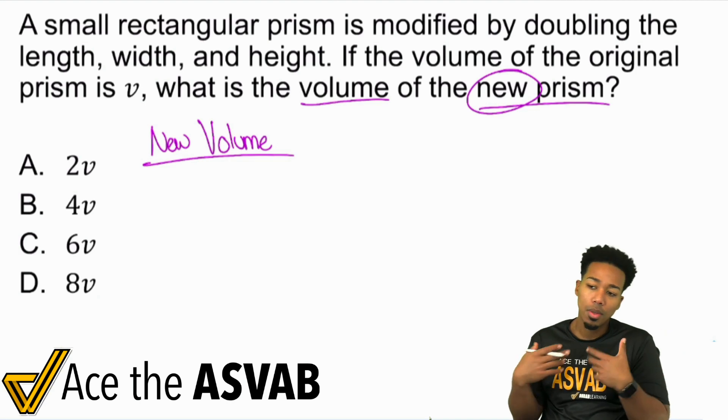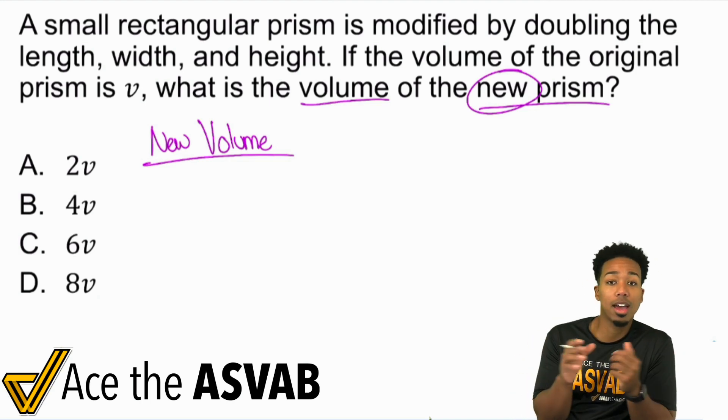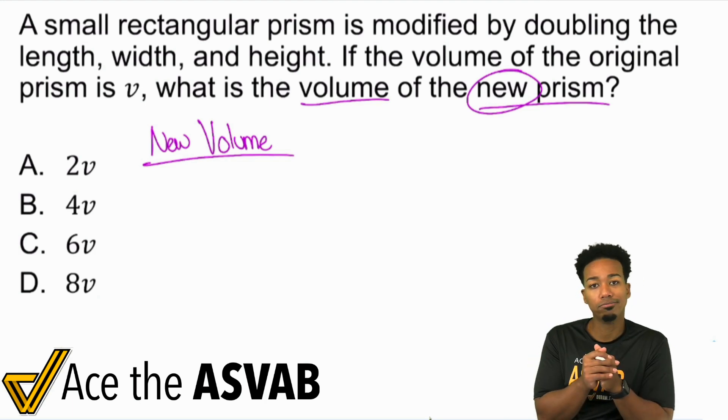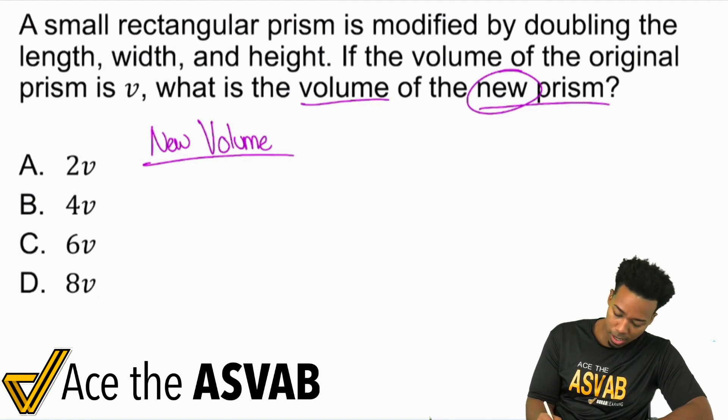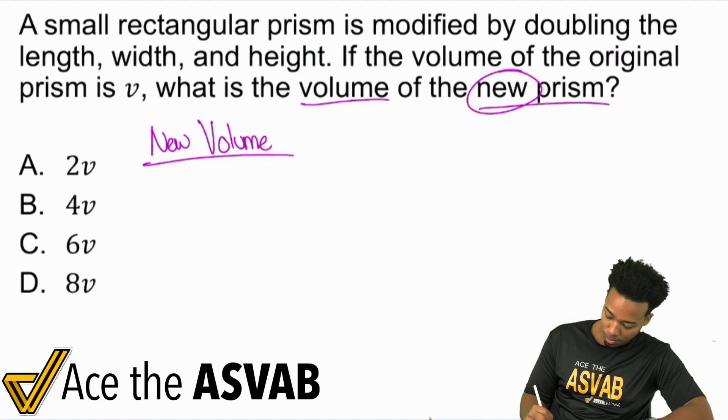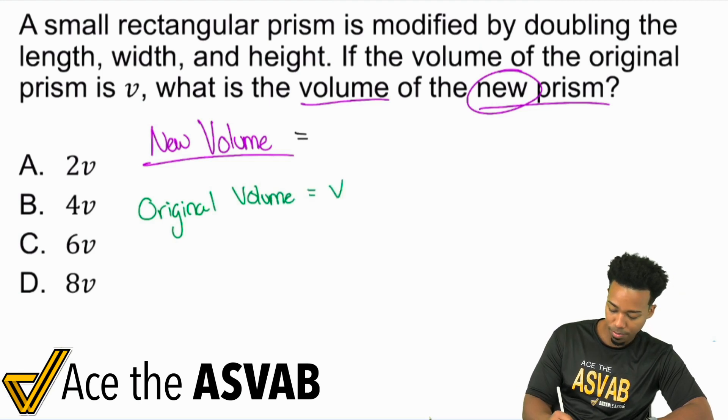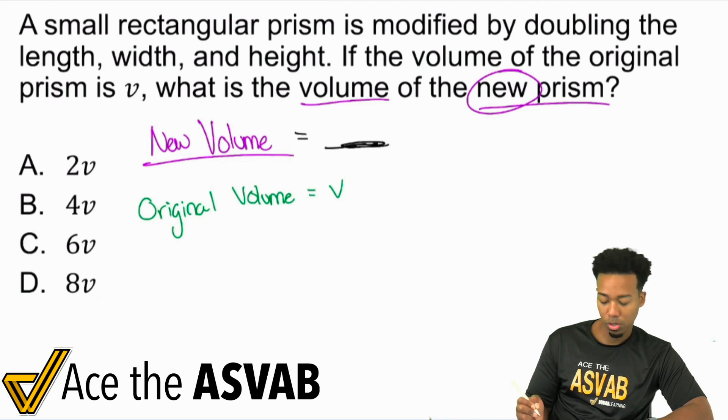Obviously the problem just said new prism, so is there an old prism? Absolutely. So here's what I'm doing. I'm just letting the story kind of lead the way for me. Once I understand what I want, the volume of the new prism, well then I'm gonna let the story take care of the rest. We have the original prism. So the original volume equals V.